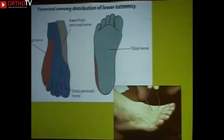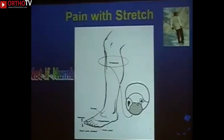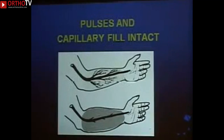Knowing the nerve distribution, and with the patient blindfolded, you can track which nerves are out and figure out which compartments are involved. Pain out of proportion and pain with passive stretch are in the literature, but be careful — pain with stretch goes away once the nerve is out. Also, pain thresholds vary greatly: some patients with a forearm fracture are jumping through the window with pain while others with the same fracture are stoic and have hardly any pain.